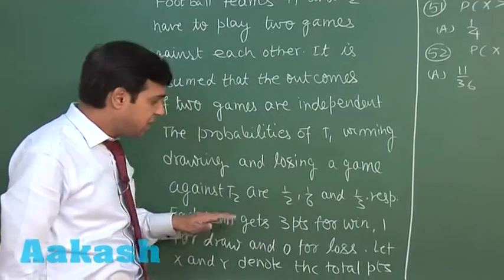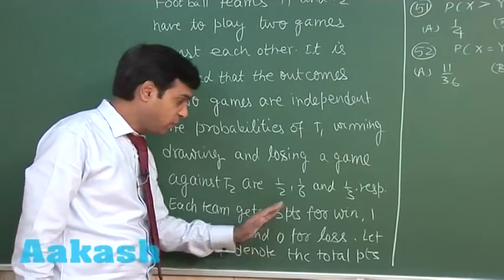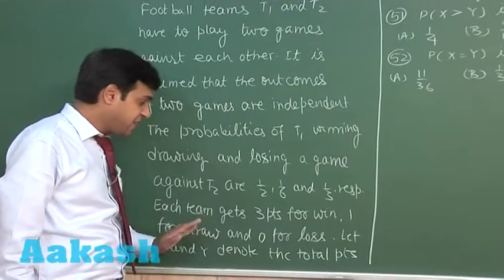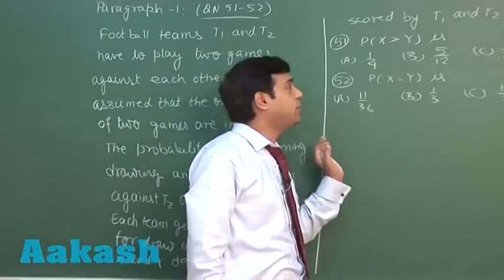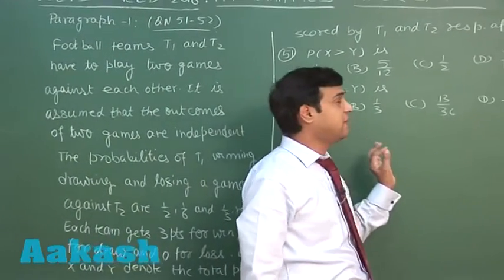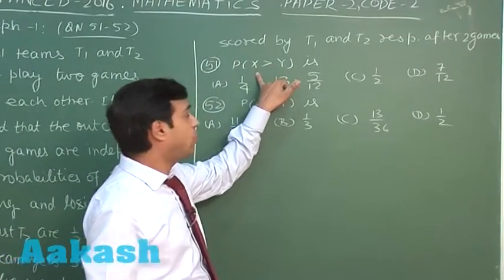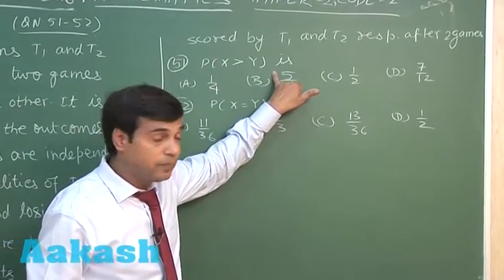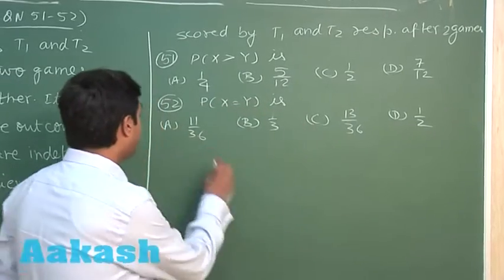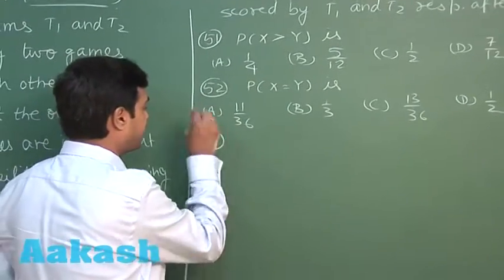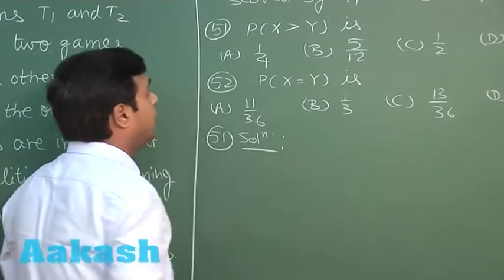Each team gets three points for a win, one for a draw, and zero for a loss. Let X and Y denote the total points scored by T1 and T2 respectively after two games. First we have to find the probability that X is greater than Y, second we have to find the probability X equals Y. Let's start with question 51.